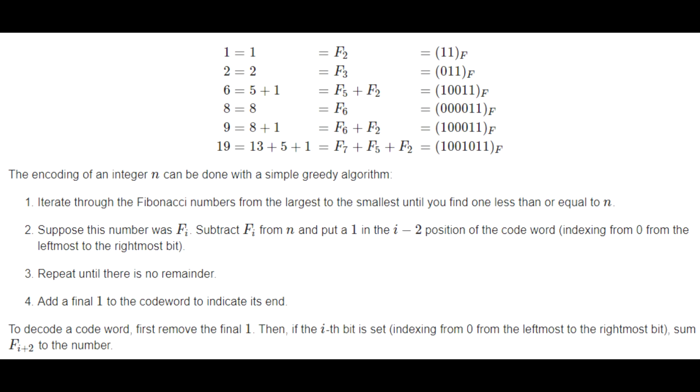So to do this you would use a simple greedy algorithm. You're going to loop through the Fibonacci numbers from the largest to the smallest until you find one that is less than or equal to n. And then suppose this number was F of i, then we're going to subtract this number from n and put a one in the i minus two position.